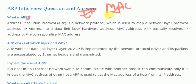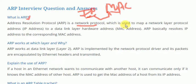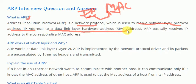ARP resolves IP address to MAC address. With the help of an IP address assigned to a device, we can identify the MAC address of that device. It is a network protocol used to map a network layer address (IP address) to a data link layer address (MAC address).